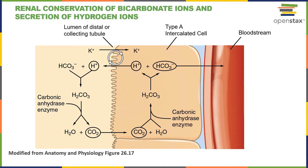In response to acidosis, this mechanism is very similar to the mechanism of the proximal convoluted tubule. The major difference is that potassium ions are exchanged for hydrogen ions at the apical surface of the type A intercalated cell, instead of sodium ions.